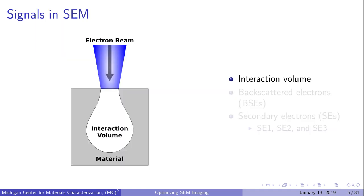When the electron beam hits the sample, it interacts with some of the atoms there to generate different types of electrons and x-rays. The volume that generates these electrons and x-rays is called the interaction volume. The size and shape of the interaction volume can vary depending on the sample composition, surface topography, and imaging parameters. While the interaction volume generates x-rays and electrons, we'll focus on the electrons in this lesson.